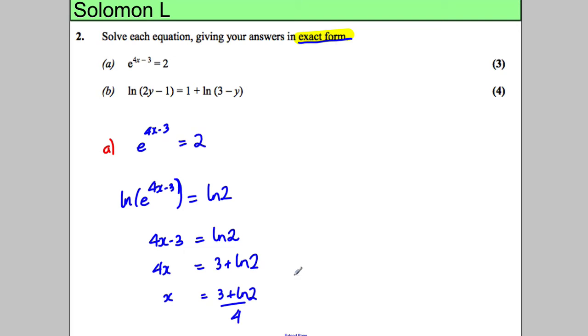Okay, for part B, I might actually do part B beside it just so it's on the same page. So we're asked to solve the natural logarithm of 2y subtract 1 is equal to 1 add the natural logarithm of 3 subtract y. So what I'm going to do is subtract ln(3 subtract y) from both sides so I can combine logs.